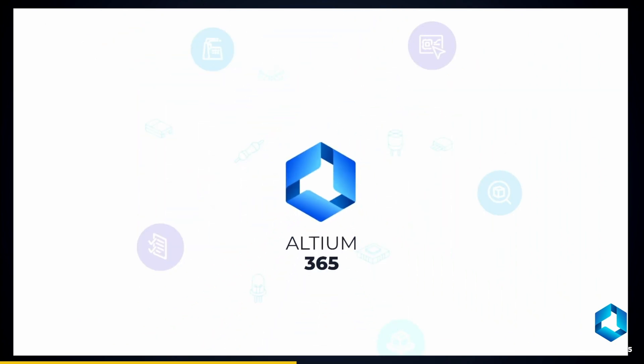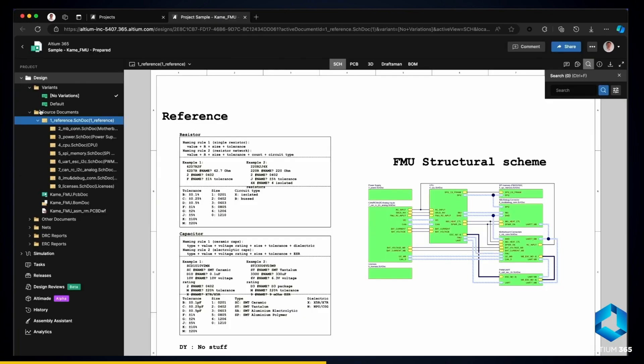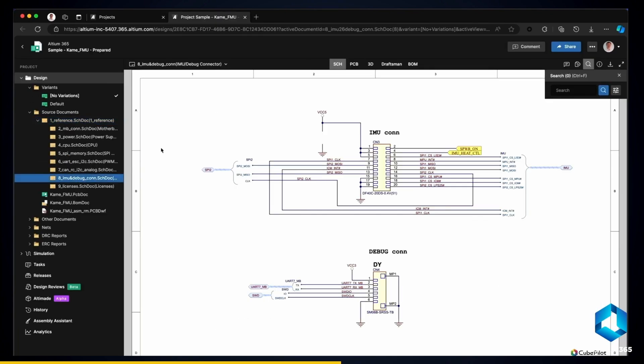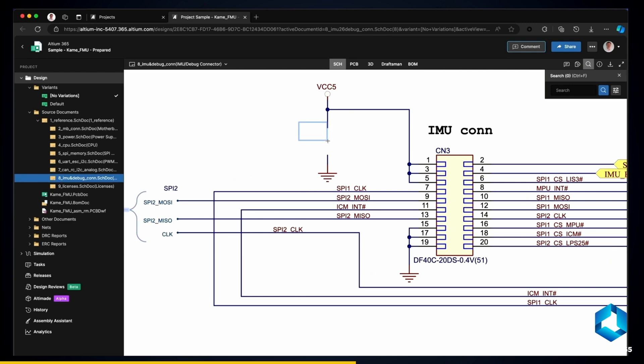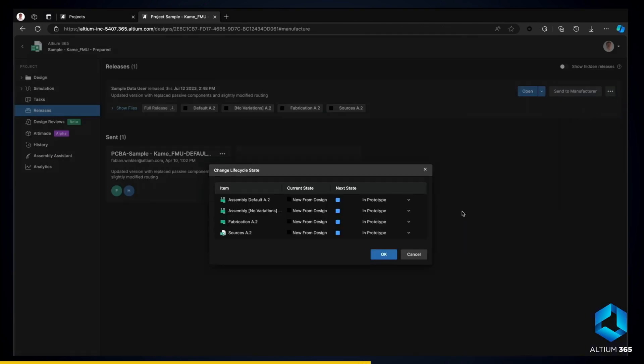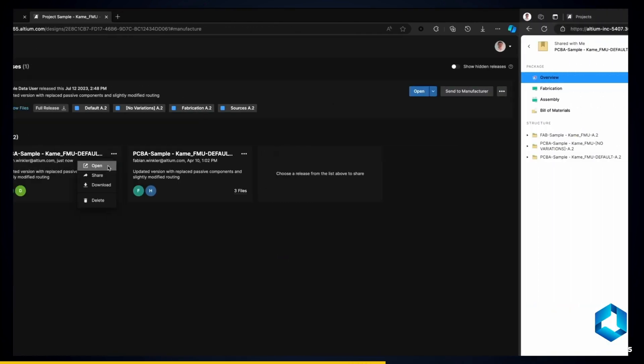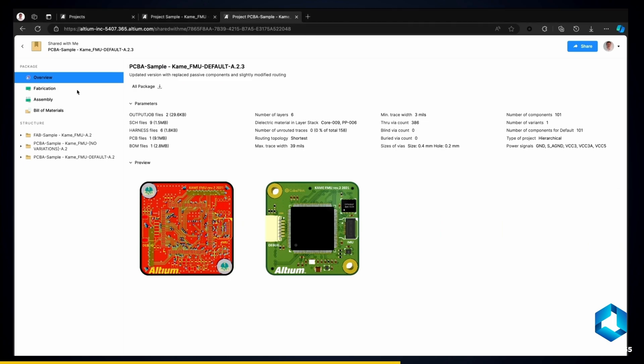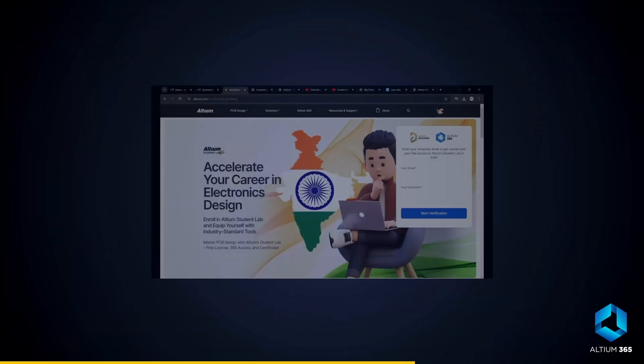It's a fantastic way to enhance your skill and increase your chances of landing a job in core electronics companies. And with its best feature, Altium 365, you can upload projects to the cloud, manage libraries, collaborate, and review with your team. It supports all CAD files, making electronics design faster and easier.